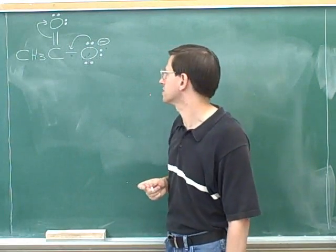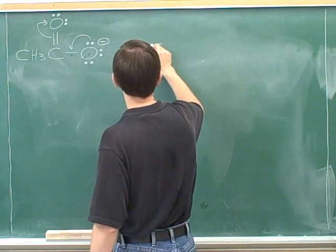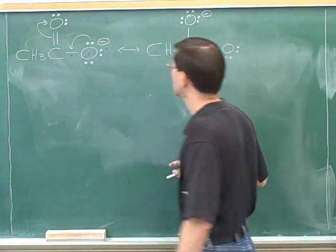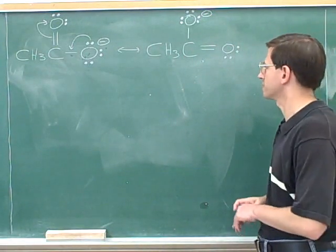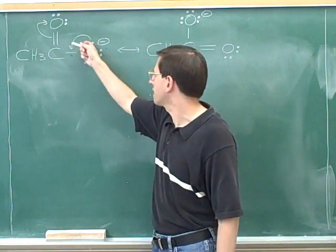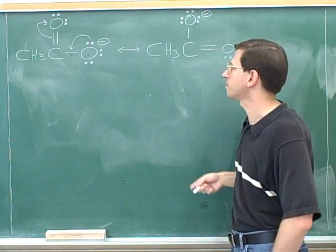Well here's the other resonance structure that we get if we move the electrons around in this fashion. So you can see that we took this lone pair and we converted it into a pi bond. So the lone pair is gone and we've converted that into a pi bond.